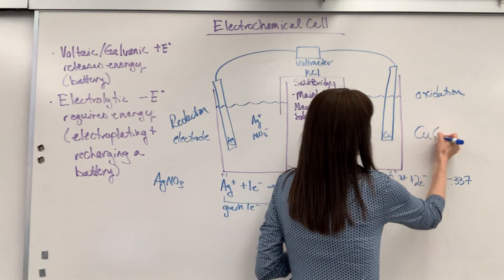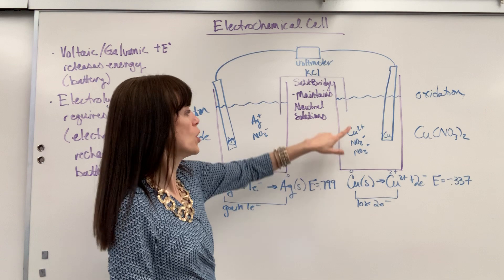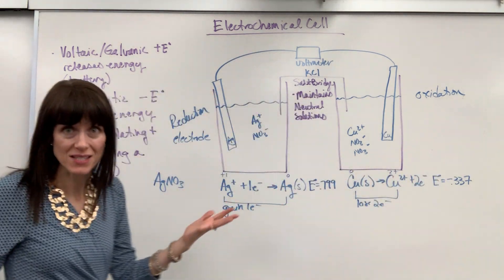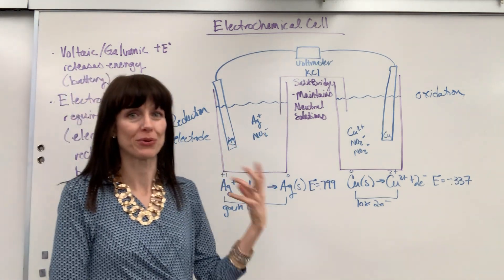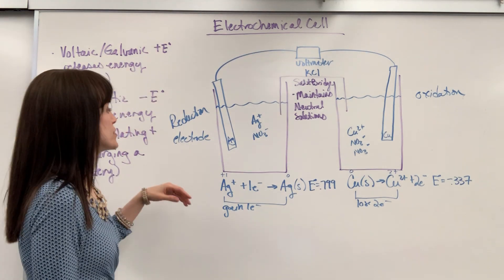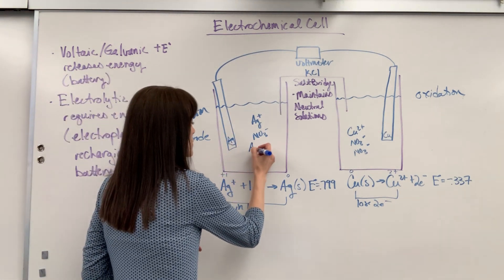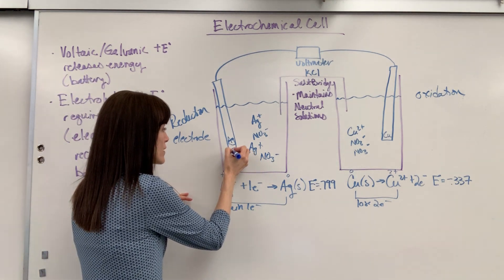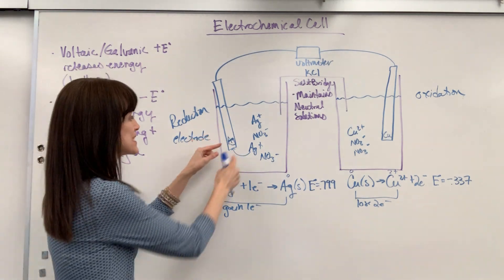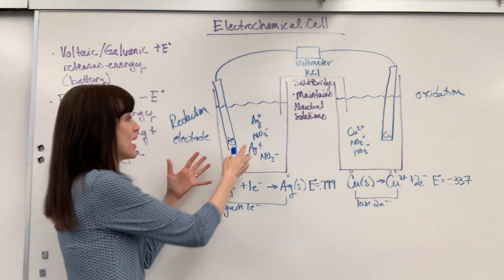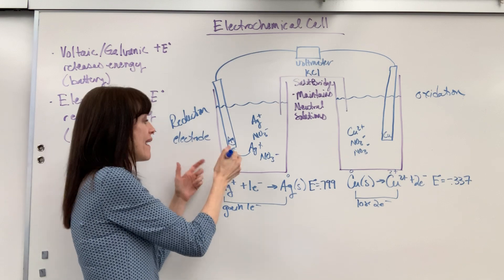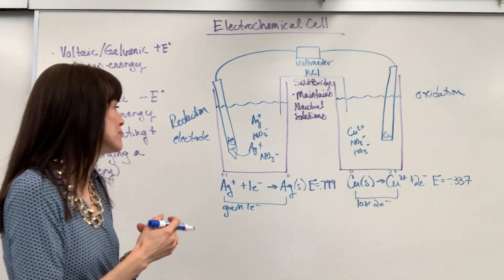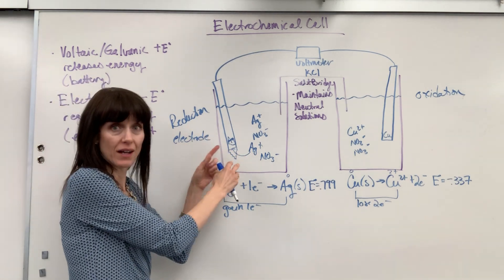That's something the AP test and IB test would want to see — that you know how to properly dissociate the correct number of ions. So here's literally what's happening: the silver ion is coming over to the silver electrode, gaining an electron and attaching. The ions in solution attach, attach, attach, and it actually looks like the electrode is growing — it gets a little longer, kind of fuzzy-looking. That's what's happening with the ion on the reduction side. On the oxidation side, we're going from solid to ion.